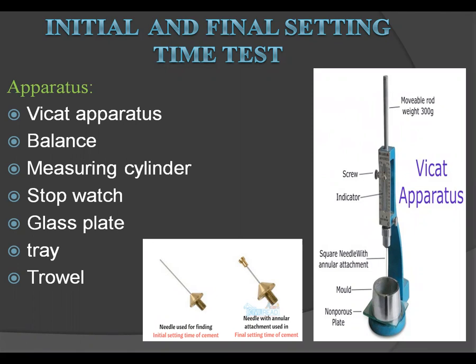First, what is the initial setting time? The initial setting time of cement is the time when the cement paste started hardening after adding water. It is the time period between the addition of water to cement till the time at which a 1 mm square section needle fails to penetrate the cement paste placed in the Vicat mould, 5 mm to 7 mm from the bottom of the mould. The final setting time is the time period between when water is added to cement and the time at which the 1 mm needle makes an impression on the paste in the mould, but the 5 mm attachment does not make any impression.